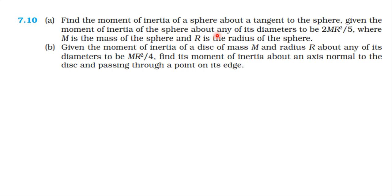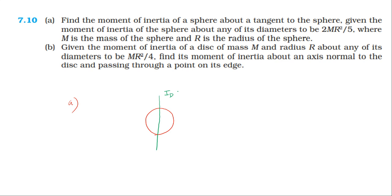For the first problem, we need the moment of inertia about a tangent to the sphere. We consider the sphere of mass m and radius r. The moment of inertia about a diameter is given as 2mr²/5. We will use the parallel axis theorem to find the moment of inertia about the tangent.